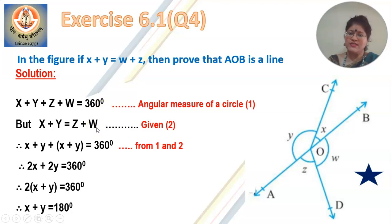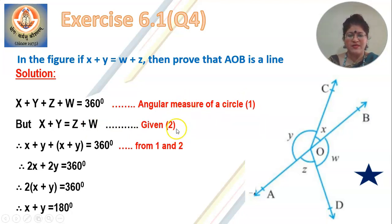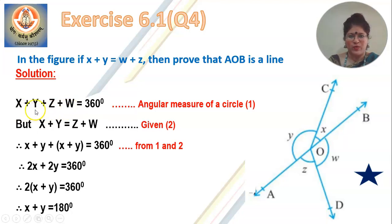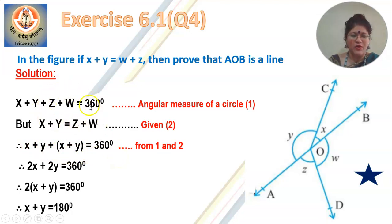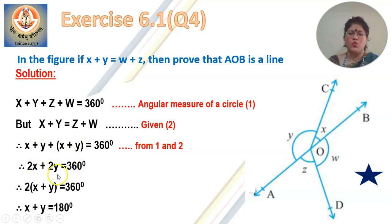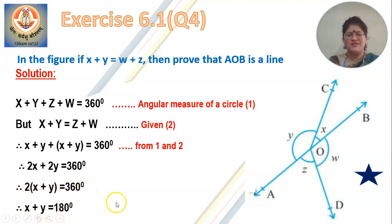Then in the next step, mention what is given: x plus y equal to z plus w — it is given. Now compare statement 1 and 2. When you compare these two statements, you could substitute one into the other. So in place of x plus y, you could write z plus w, or in place of z plus w, you could write x plus y. Either way is correct. So what I have written is: x plus y plus x plus y equal to 360 degrees — instead of z plus w, I have written x plus y, and this is from statements 1 and 2. When you add them, you get 2x plus 2y equal to 360 degrees. Factorize further — you get 2 outside common: 2 times (x plus y) equal to 360 degrees. Therefore, x plus y equal to 180 degrees.